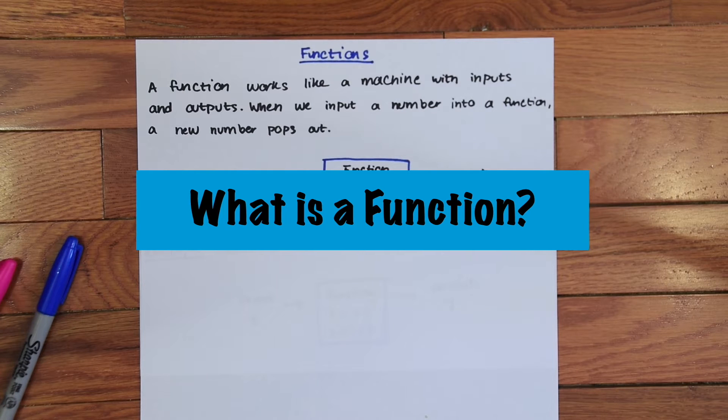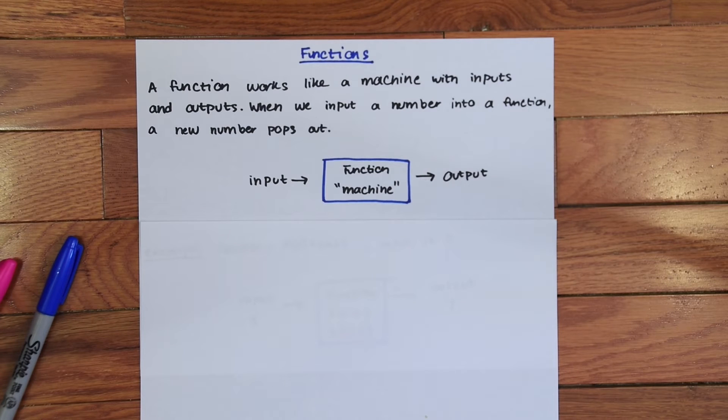So what is a function anyway? A function works like a machine with inputs and outputs. When we input a number into a function, a new number pops right back out. We can say that a function is like a machine because it transforms one number into a completely different number once it enters a so-called machine. So if that doesn't make any sense, that's okay. Let's look at an example and see why this is like a machine.